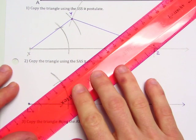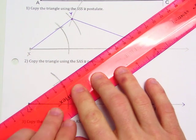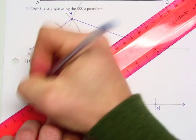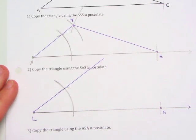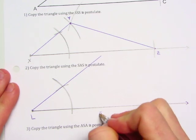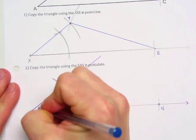Once you have that, you can draw the ray from point L through that intersection. So far we have our side and an angle.